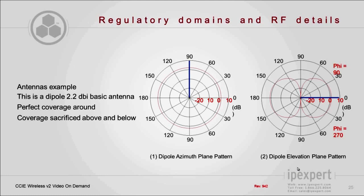Now looking at the elevation pattern, you have to think of it as viewing the access point from the side. Place your access point on a desk, view it directly from the side — lower yourself a bit — and this is the coverage you would see represented.